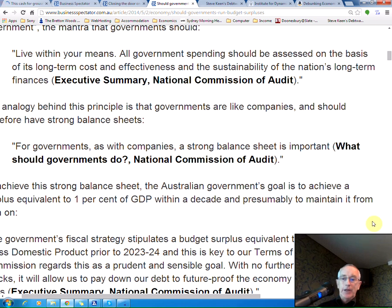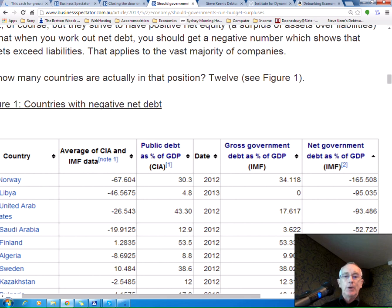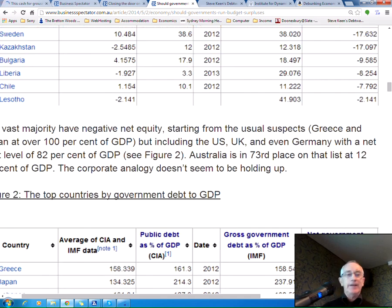Well, how many countries actually achieve that? The answer is 12 have negative net debt. The top one is Norway. Next is Libya, United Arab Emirates, Saudi Arabia. Can anybody notice a pattern here? Oil exporters. You then get Finland, Algeria, Sweden, Kazakhstan. Borat lives. Bulgaria, Liberia, Chile and Lesotho. Obviously countries we wish to emulate, correct? We can't find the oil. Let's become like Lesotho instead.